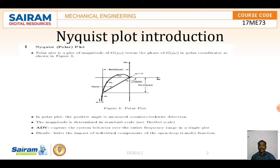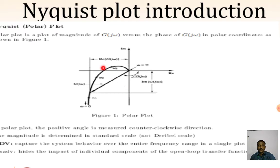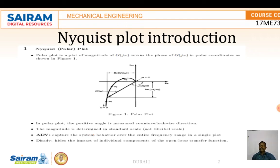In this figure, we will see Re[G(jω)] and this is the angle of G(jω) and Im[G(jω)]. This is the real part G(jω). Omega starts from 0 and ends at infinity. This line is called G(jω). In the polar plot, the positive angle is measured in the counterclockwise direction. The magnitude is determined in the standard scale and capture of the system over the entire frequency range is a single plot.